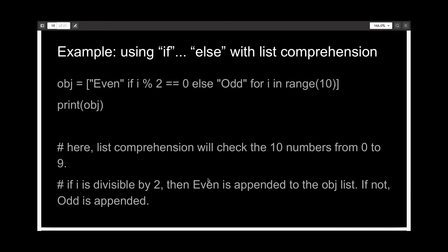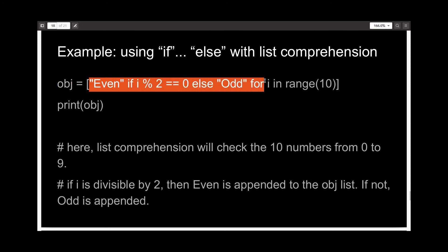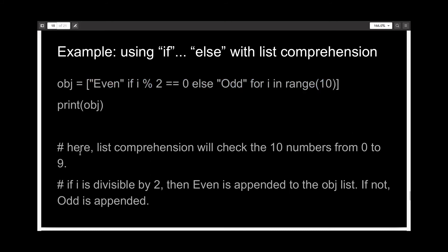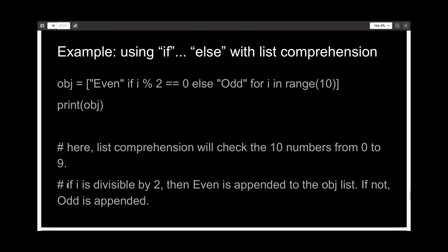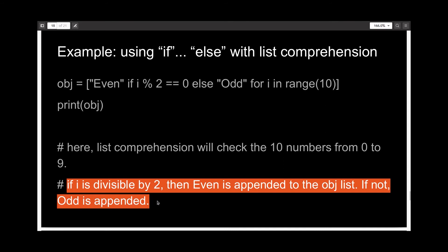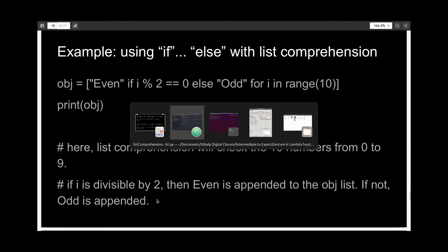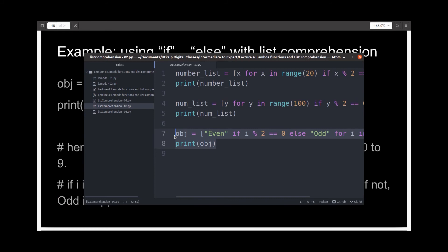You can also use if-else and not just if. So here, the obj_list is 'even' if i modulus 2 is equal to 0 else 'odd' for i in range(0, 10). So here list comprehension will check the 10 numbers from 0 to 9, and if i is divisible by 2 then 'even' will be appended to the list. I've just written it out here.